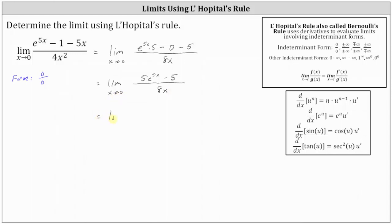This limit equals the limit as x approaches 0 of the derivative of the numerator divided by the derivative of the denominator. The derivative of 5e to the 5x is 5e to the 5x times 5, or 25e to the 5x, minus the derivative of 5, which is 0, divided by the derivative of 8x, which is 8. We can now find the limit by direct substitution: 25e to the power of 5 times 0, divided by 8. Since e to the 0 equals 1, the limit is 25 eighths.